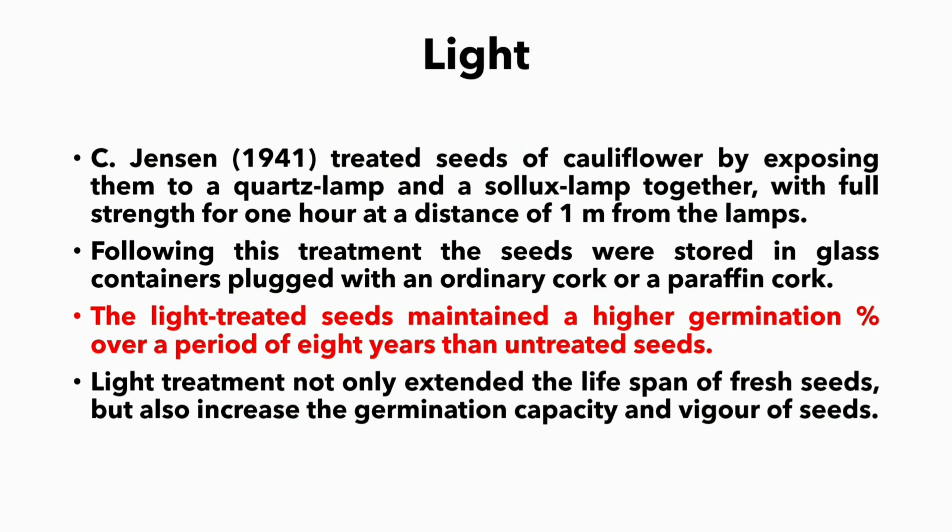C. Jensen in 1941 treated seeds of cauliflower by exposing them to a quartz lamp and selects lamp together with full strength for one hour at a distance of one meter from the lamp. Following this treatment, the seeds were stored in glass containers plugged with an ordinary cork or a paraffin cork. The light-treated seeds maintained a higher germination percentage over a period of eight years than untreated seeds. Light treatment not only extended the lifespan of fresh seeds but also increased germination capacity and vigor.